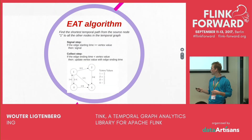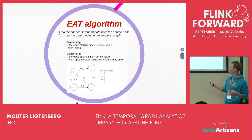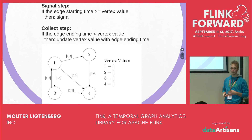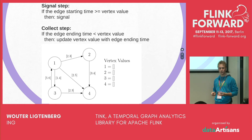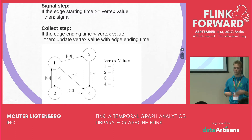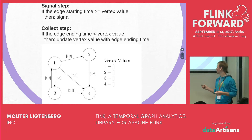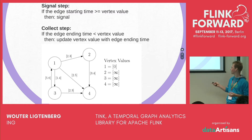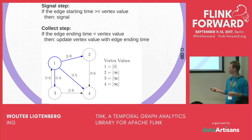As an example, I have here a temporal graph. The goal is to find the shortest temporal path from the source node 1 to all the other nodes in the temporal graph. We have a signal step, which indicates when the edge starting time is larger than or equal to the vertex value, we send a signal to the neighbor node. And we have a collect step, which indicates when the edge time is smaller than the vertex value, we update the vertex value with the smallest arrival time. We first initialize the vertex values — for the source node we take zero, and for the other nodes we take infinite. Then we start the signal process from node 1, which sends three signals to nodes 2, 3, and 4.